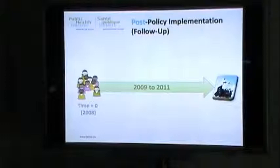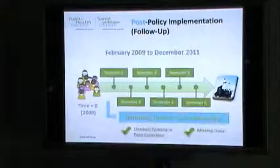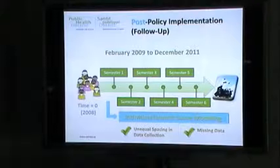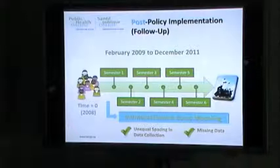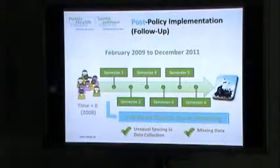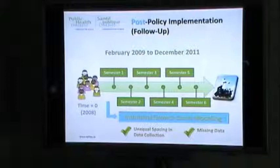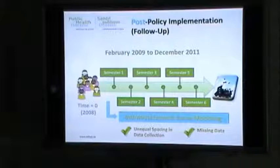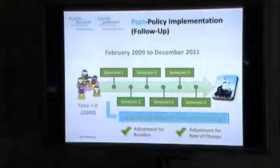The follow-up period happened over 2009 to 2011. Because kids can take phys ed in either first or second semester, the spacing between data collections was not equal, and we also had some missing data. Because of these characteristics, we used individual growth curve modeling to look at trajectories of the kids' physical activity over time. This approach also allowed us to adjust for baseline physical activity levels and rate of change over time.